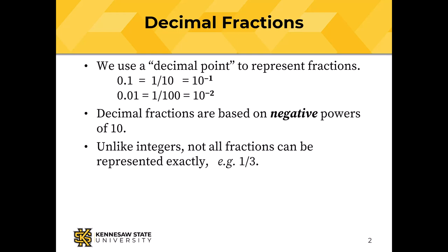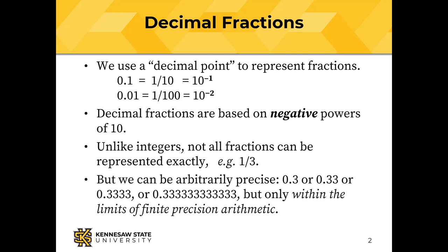Unlike the integers, not all fractions can be represented exactly. For example, the fraction one-third can't be represented exactly as a decimal fraction. However, within the limits of finite precision arithmetic, we can be arbitrarily precise. If 0.3 isn't close enough, we can use 0.33, or 0.3333, or even a decimal point followed by 12 threes, but only within the limits of finite precision arithmetic. If we don't have room to store 12 threes, we can't be that precise.